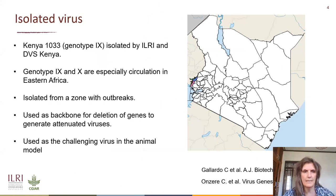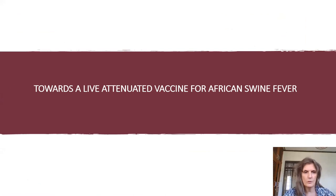Some time ago, ILRI isolated a genotype 9 virus together with DVS in Kenya. That was isolated from a zone with outbreaks at the border of Uganda and Kenya, and that has been used as a backbone for the deletion of genes to generate attenuated viruses. We have also established an animal model with this wild-type virus, which leads towards the work we have been doing to get an attenuated vaccine for African swine fever.